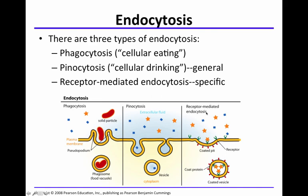Receptor-mediated endocytosis is more specific, because on the plasma membrane there are receptors with specific binding sites. Only a specific star-shaped solute or molecule or ion will bind to this receptor on the plasma membrane, and when that happens, it comes into the cell — that's the signal that says 'let's go in the cell.' Receptor-mediated endocytosis is specific; pinocytosis is more general.